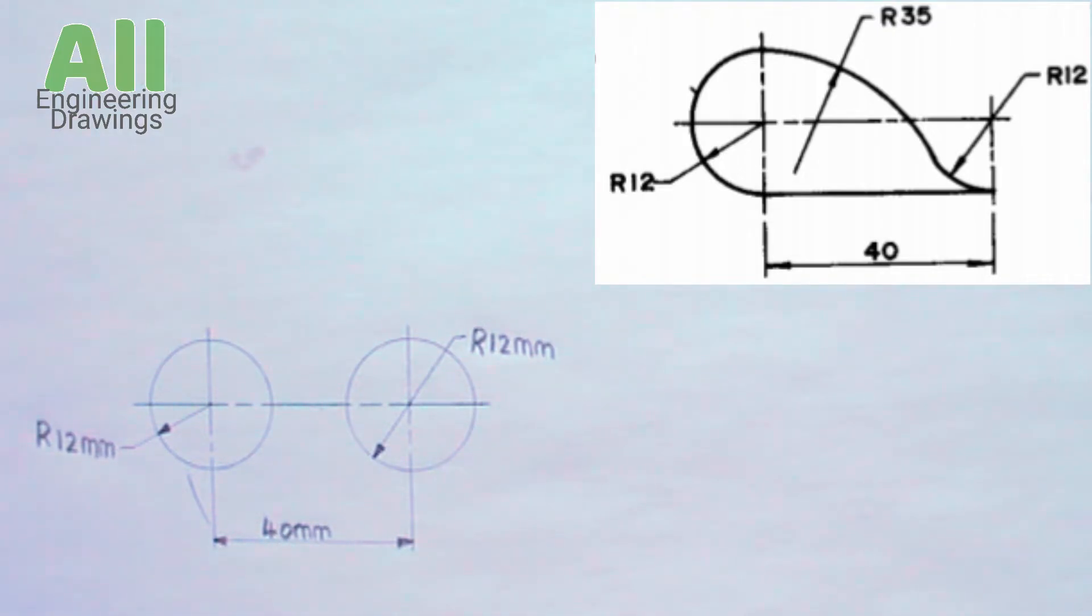Next, place your compass at the center of the left circle, then cut an arc of radius 23 millimeters. This is because 35 minus 12 is equal to 23.